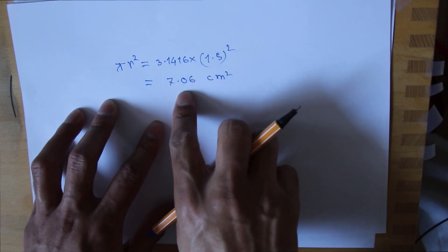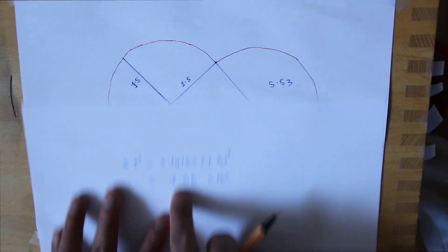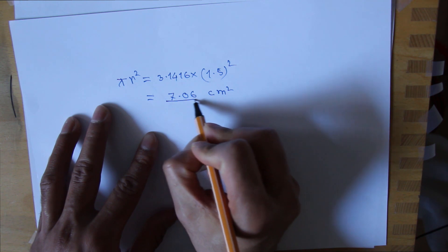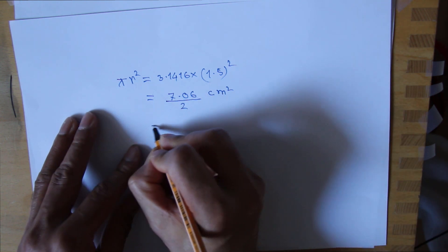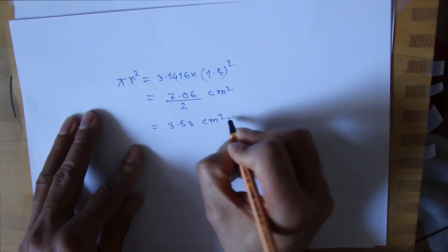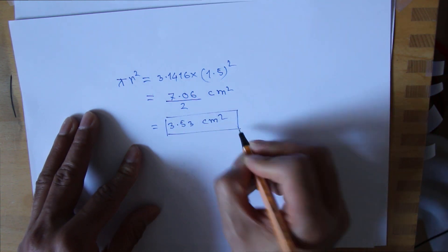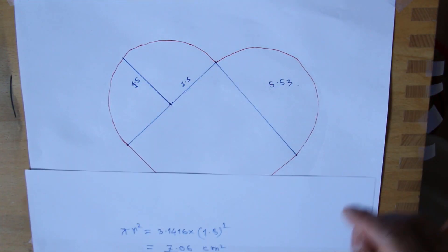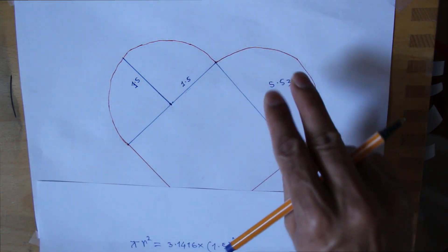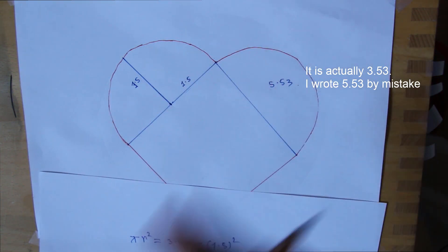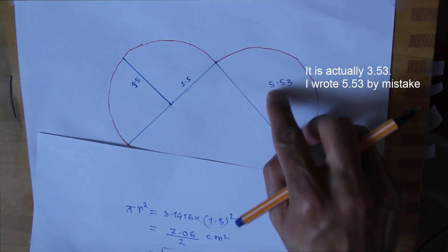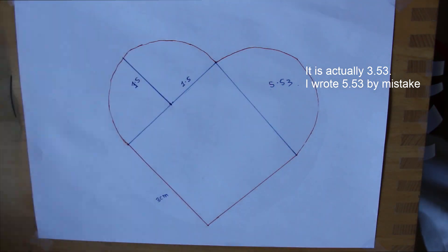But this is the surface area of a full circle, and for our case it is a half circle. So I divide this value by 2, which equals 3.53 cm squared. So 3.53 is the surface area of this half circle. We have two half circles — one here and another one here — and they have the same value, so each half circle has a surface area of 3.53 cm squared.